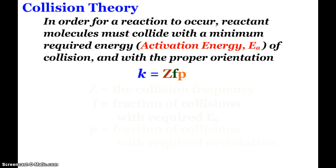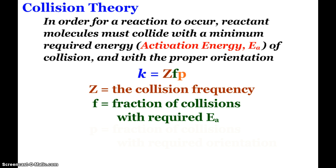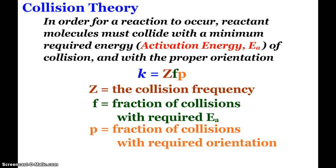Z is the collision frequency - how frequently these molecules are colliding. F is the fraction of collisions that have the required activation energy needed. P is the fraction of collisions that have the proper required orientation.